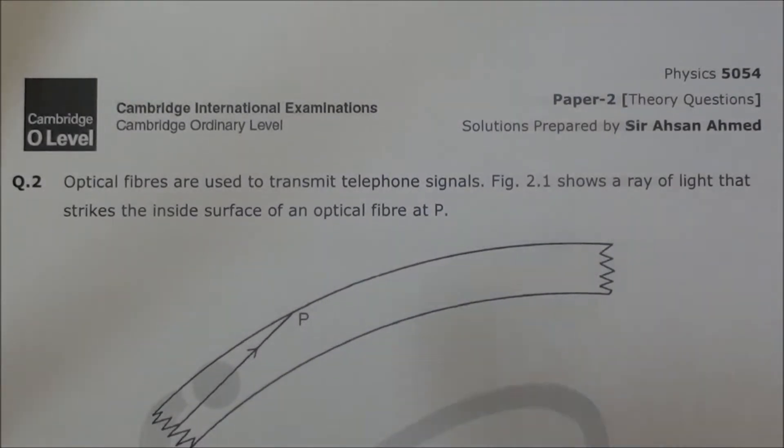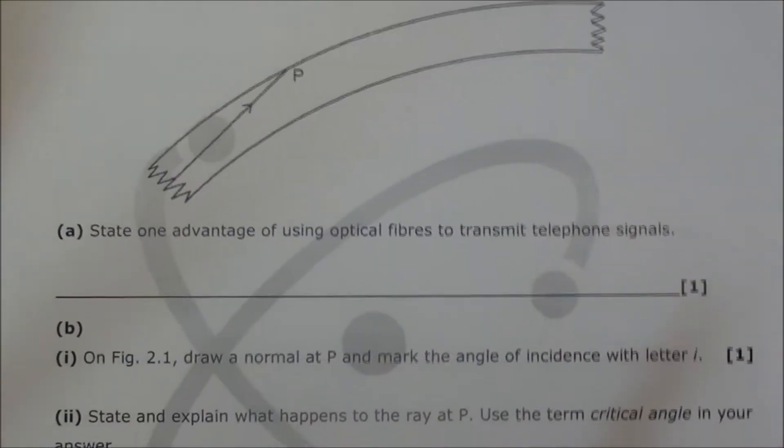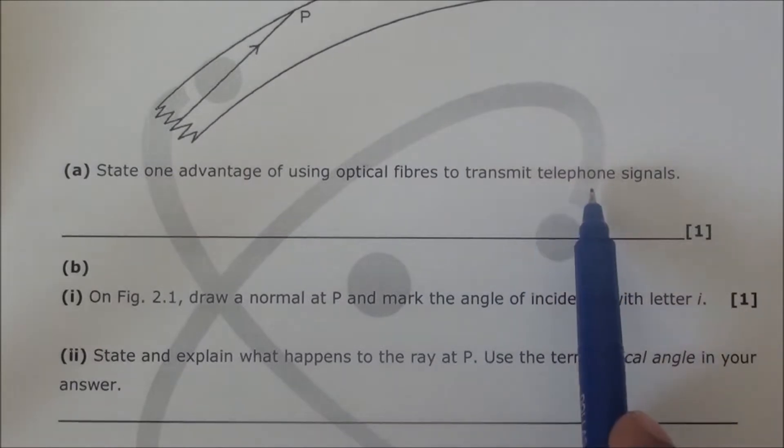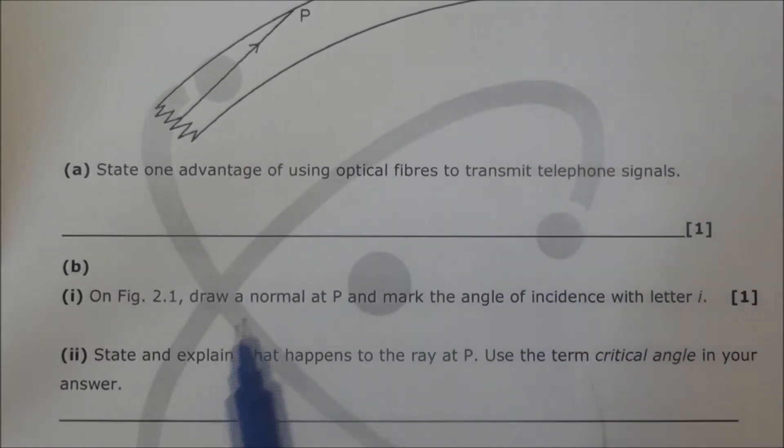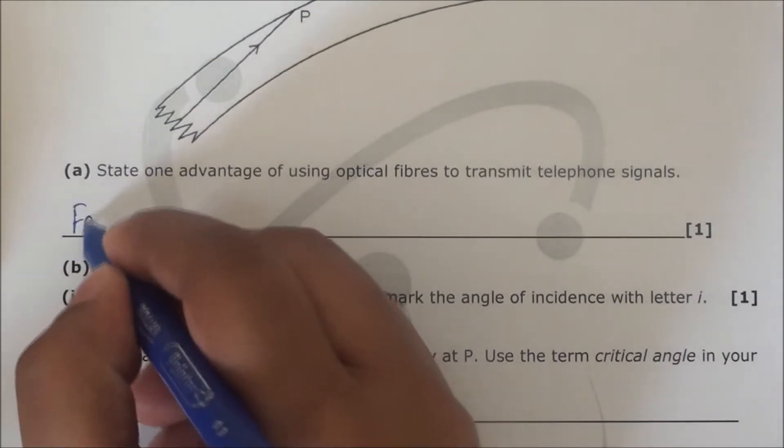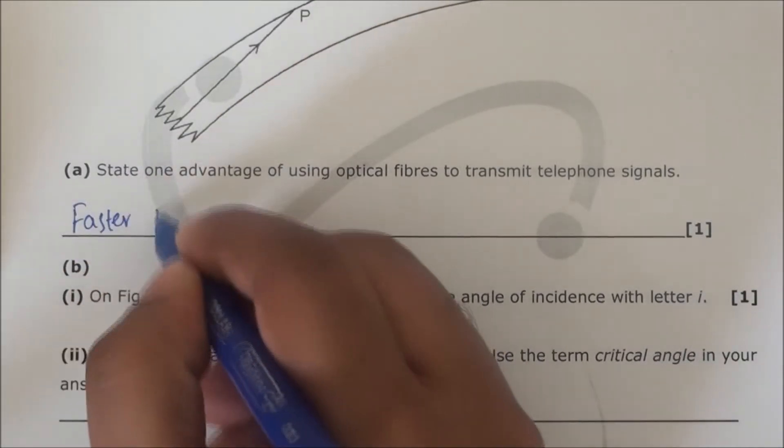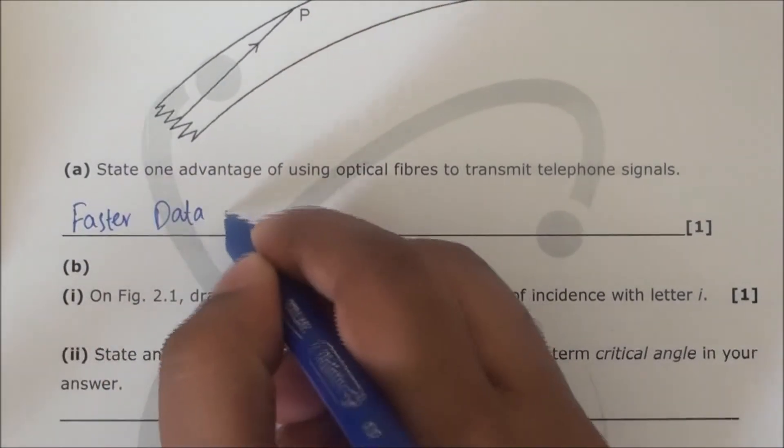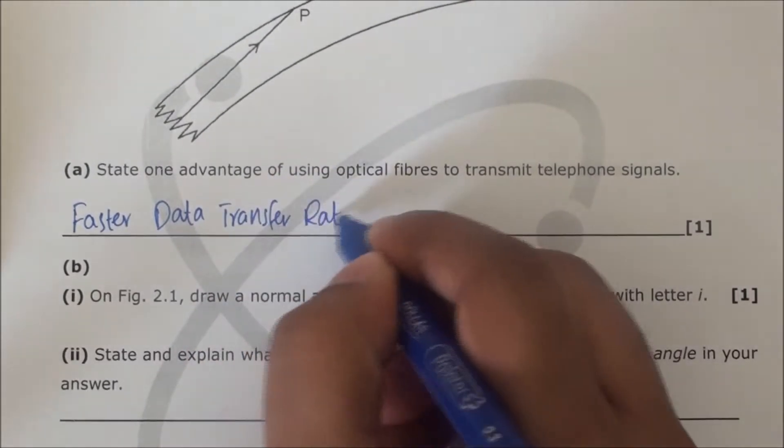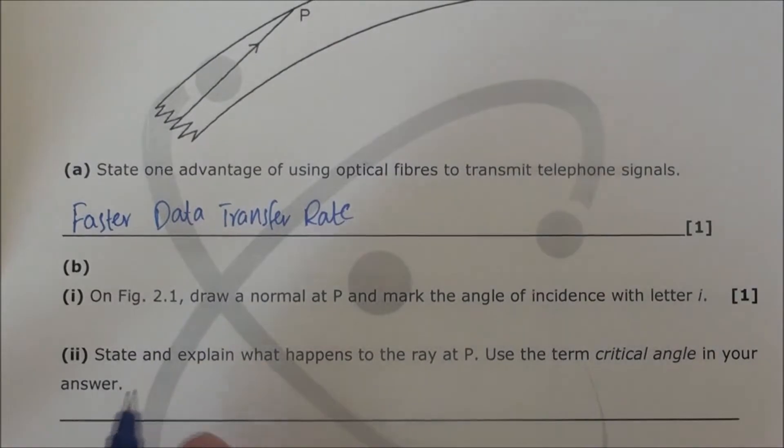The first question asks to state one advantage of using optical fibers to transmit telephone signals. You can write a simple answer: faster data transfer rate, because light is used.